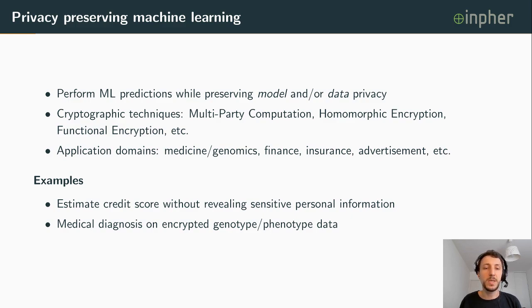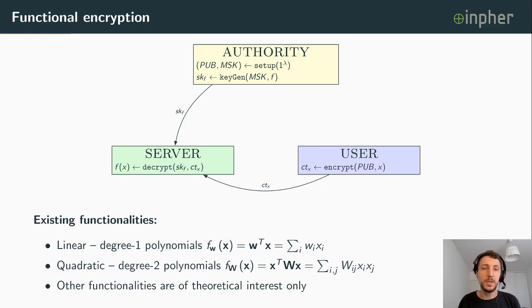For example, we can imagine a use case where a bank wants to perform a credit score estimation without having access to sensitive personal information. This use case can be implemented using encrypted personal information: the bank applies a computational functionality to this encrypted data and obtains the credit score estimation. This type of use case can be implemented using functional encryption.